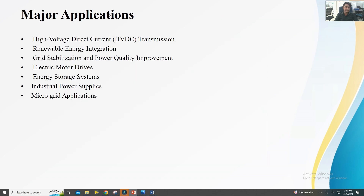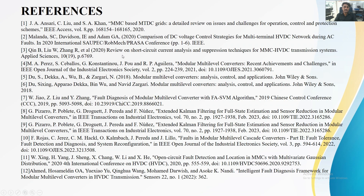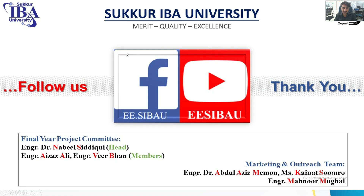These are the major applications where the MMC can be used: high-voltage direct current (HVDC) transmission, renewable energy integration, grid stabilization and power quality improvement, electric motor drives, energy storage systems, industrial power supplies, and microgrid applications. These are the references. Thanks for watching. Allah Hafiz.